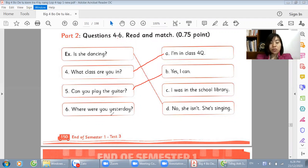Number 6. Where were you yesterday? This is a question about location. It starts with 'where'. So our answer will also be a location. Library. C, I was in the school library. That's all.